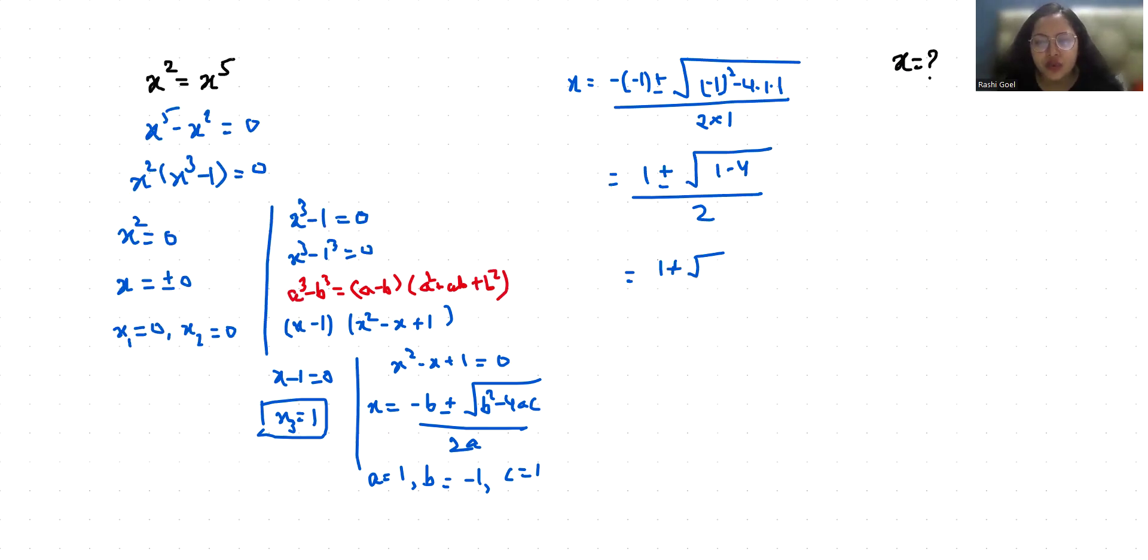So x4 is 1 plus square root of 3 i over 2, and x5 is 1 minus square root of 3 i over 2.